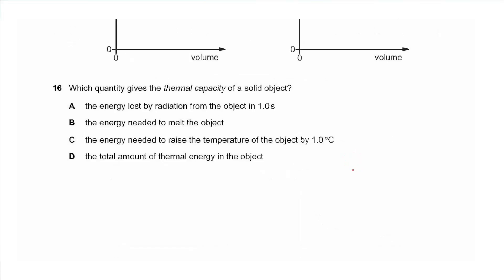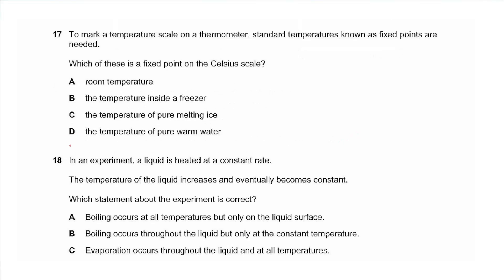Question 16 asks which quantity gives the thermal capacity of a solid object. The energy lost by radiation in one second is power. The energy needed to melt the object is latent heat. The energy needed to raise the temperature of the object by one degree Celsius is the definition of thermal capacity, so the answer is C.